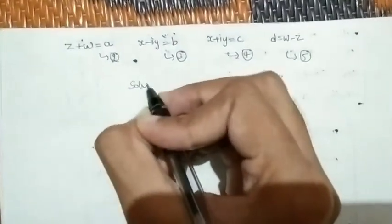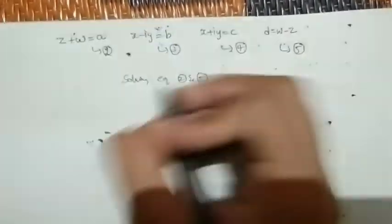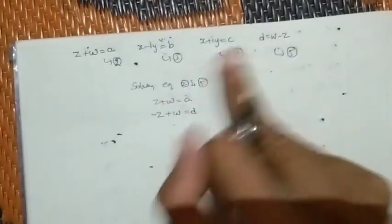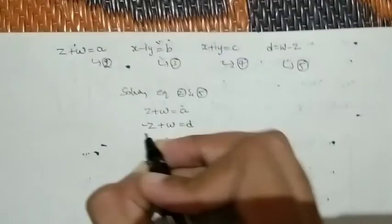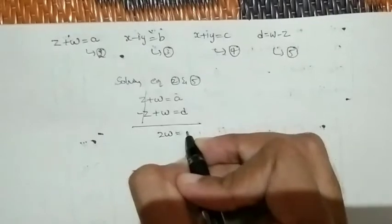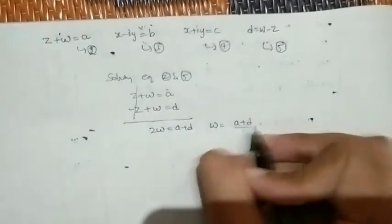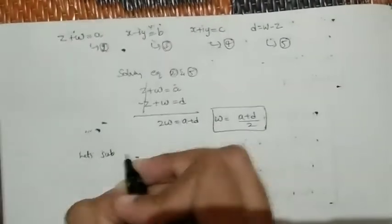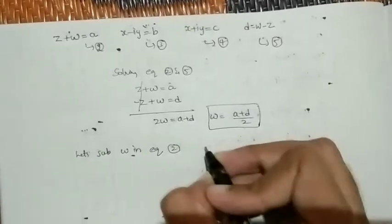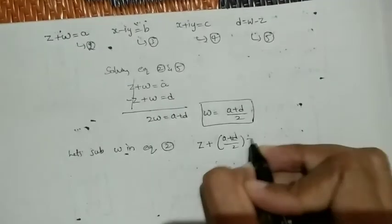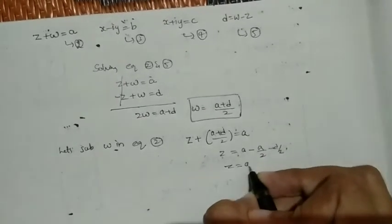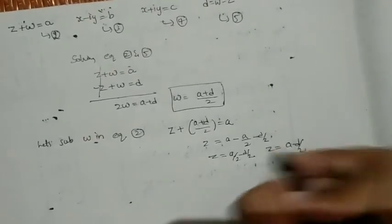Solving equations 1 and 4 — that is z + w = a and w − z = d — by adding both equations, the z terms cancel and we get 2w = a + d, so w = (a + d)/2. Substituting w back into equation 1: z + (a + d)/2 = a, giving z = a − (a + d)/2 = (a − d)/2.